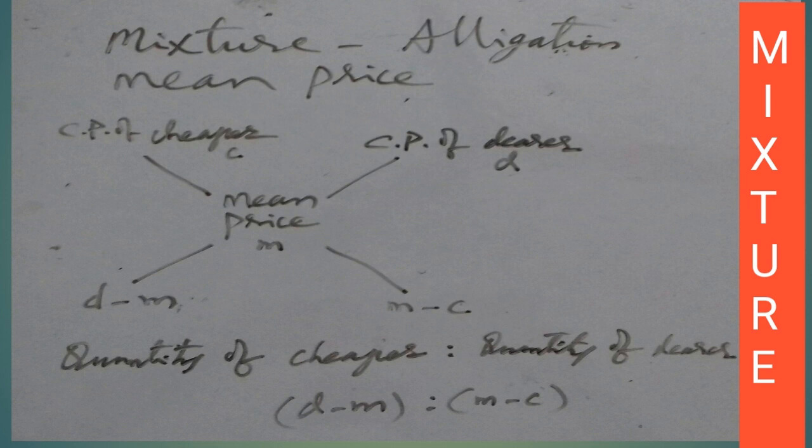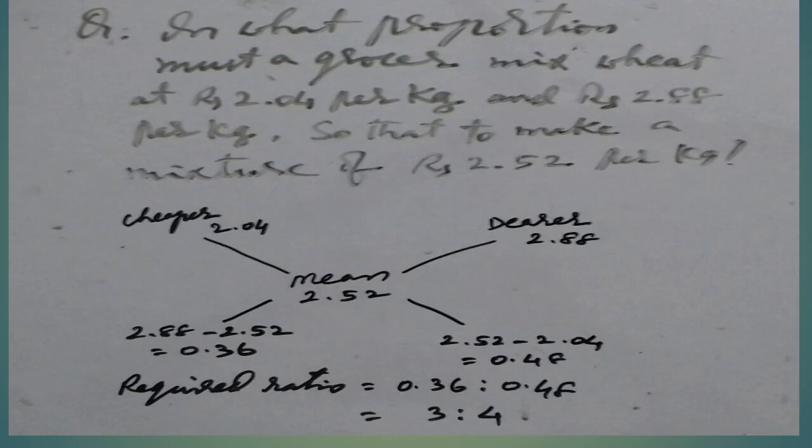In what proportion must a grocer mix wheat at Rs. 2.045 per kg and Rs. 2.88 per kg so as to make a mixture worth Rs. 2.52 per kg? This is the question.